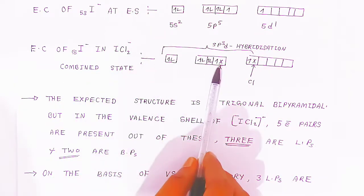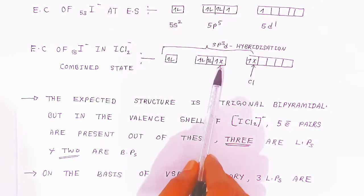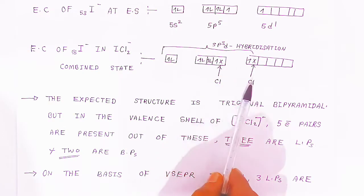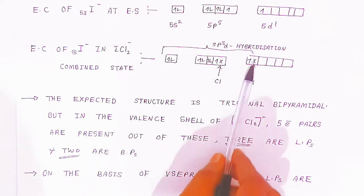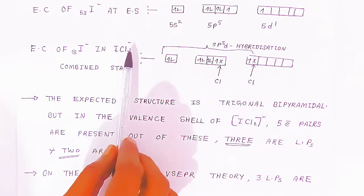The electron of the chloride (shown with a cross symbol) will overlap with the iodide orbitals and they will form ICl₂⁻.